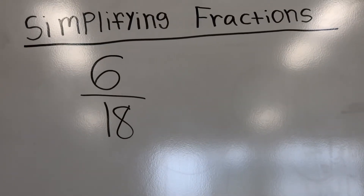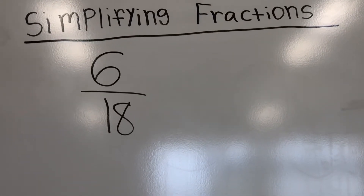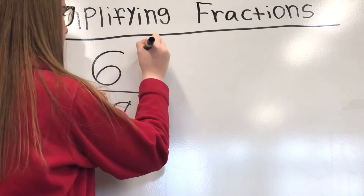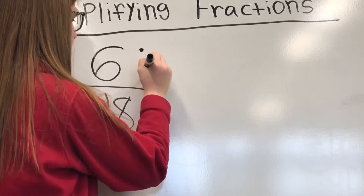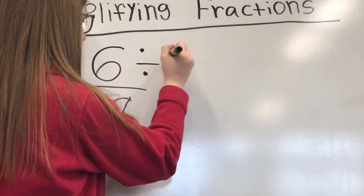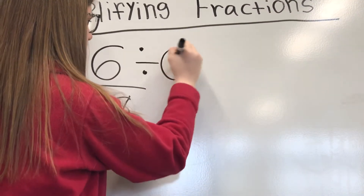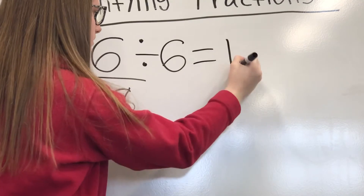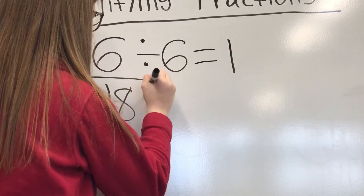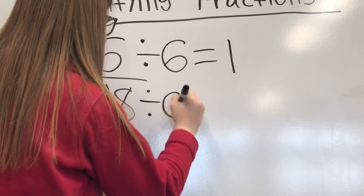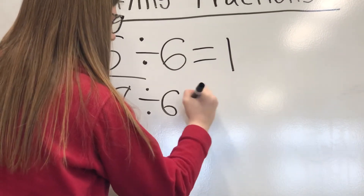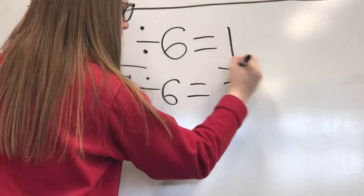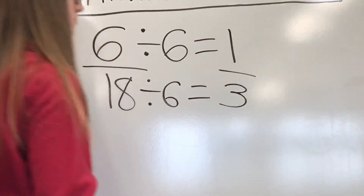In this case the number is 6. So 6 divided by 6 is 1, and 18 divided by 6 is 3, and then you put your fraction bar.